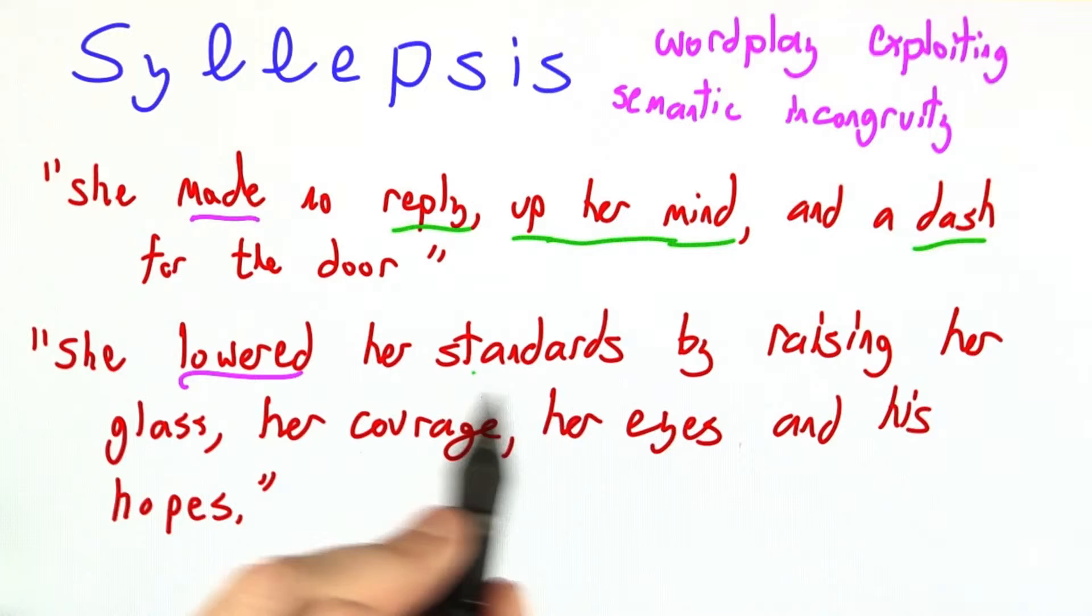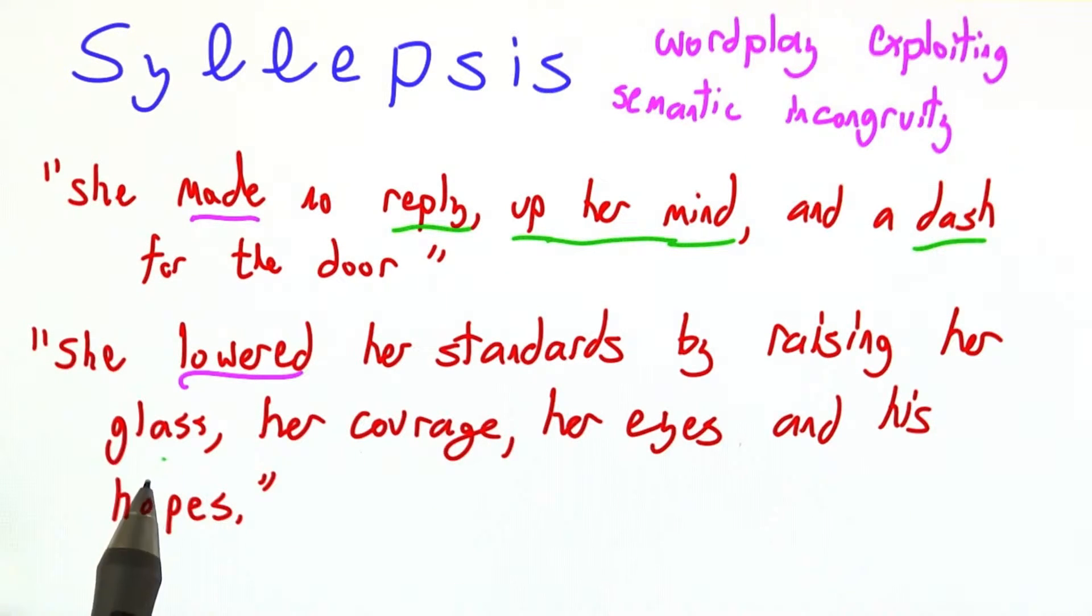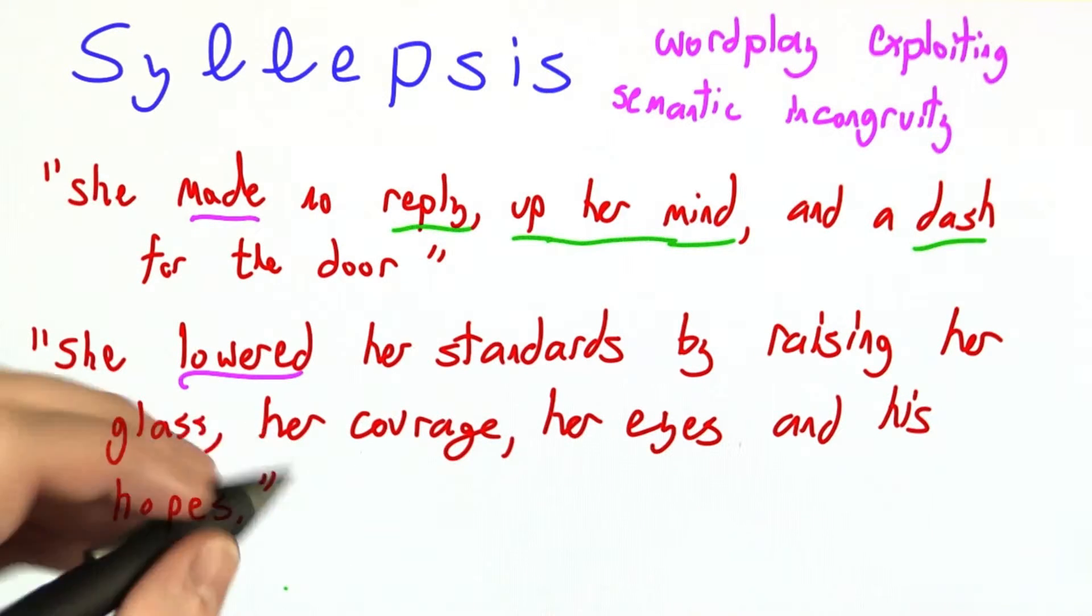Lowered is being applied to standards. That means to give up your ideals or try something worse. Raising her glass as if in a toast. Raising her courage to muster up her willpower. Raising her eyes to look up at someone. And raising his hopes because, well, nothing good happens in this poem.